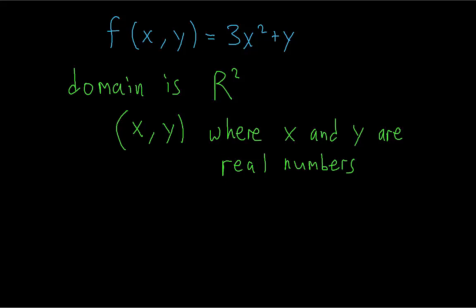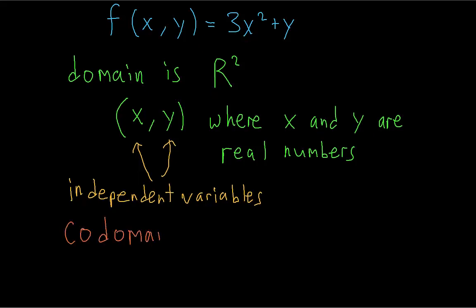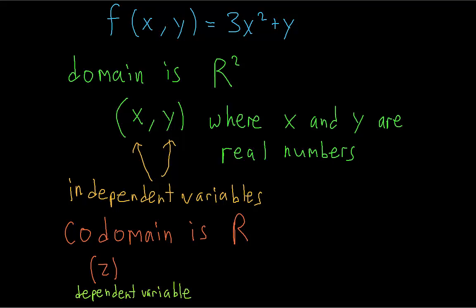So unlike most functions you've encountered before, where all you do is plug in a number x, in this function you need to plug in a pair of numbers x and y. We call x and y the independent variables of this function. The number that depends on these independent variables is the output of the function. The outputs belong to the codomain, which in this case is just R, because you get a single real number. We denote this with z, and z is the dependent variable, because its value completely depends on what values you plug in for x and y.